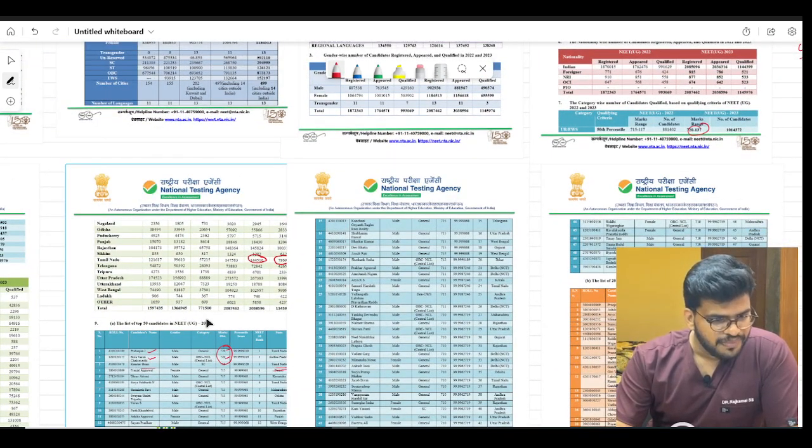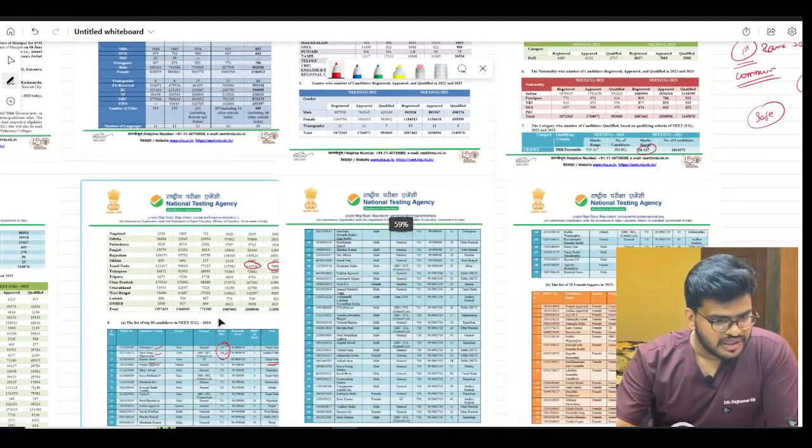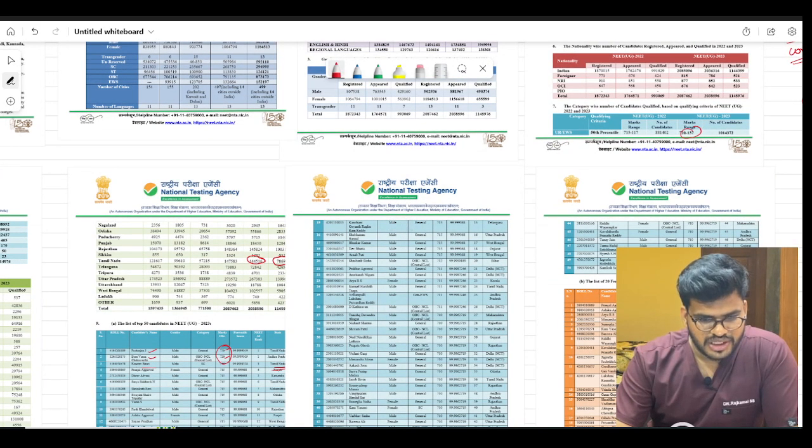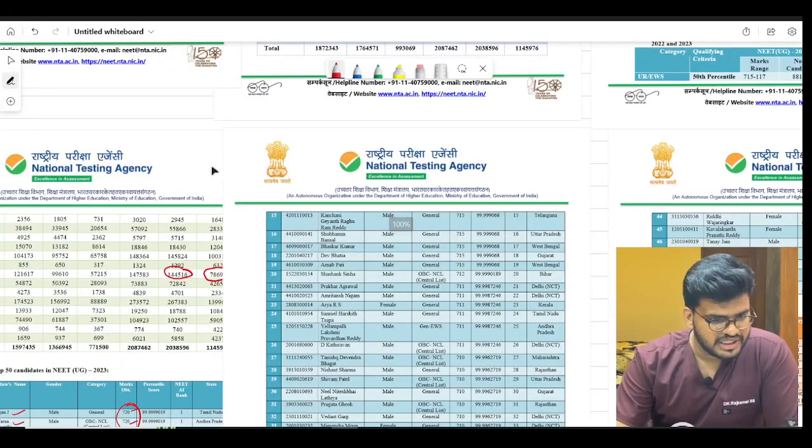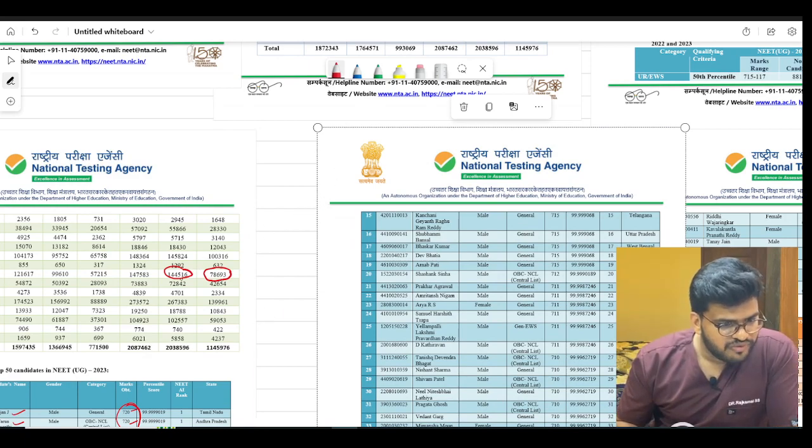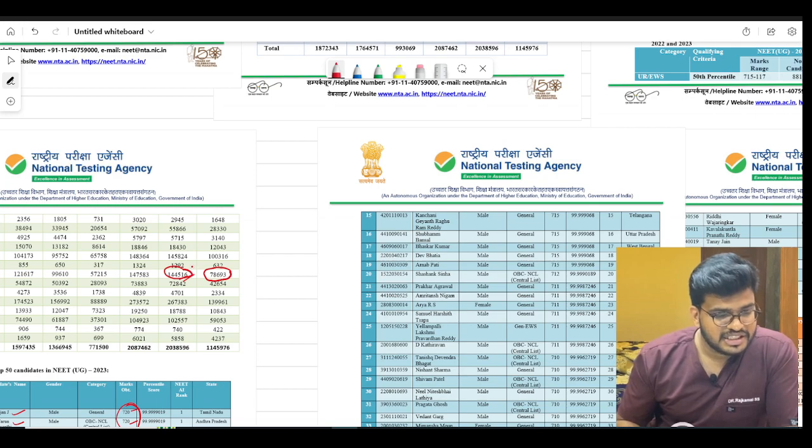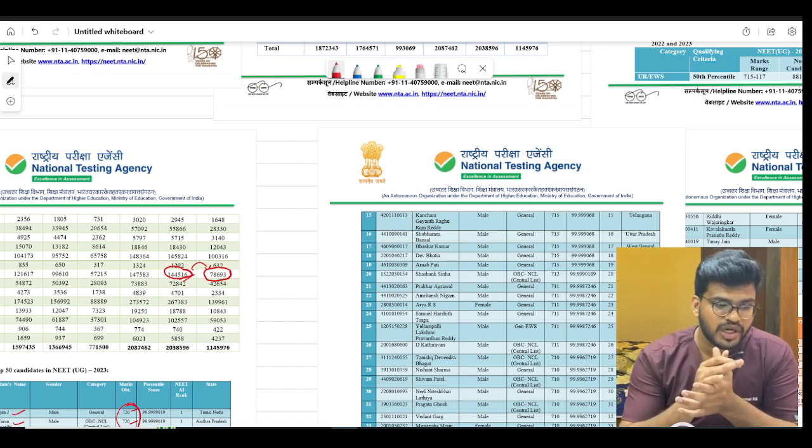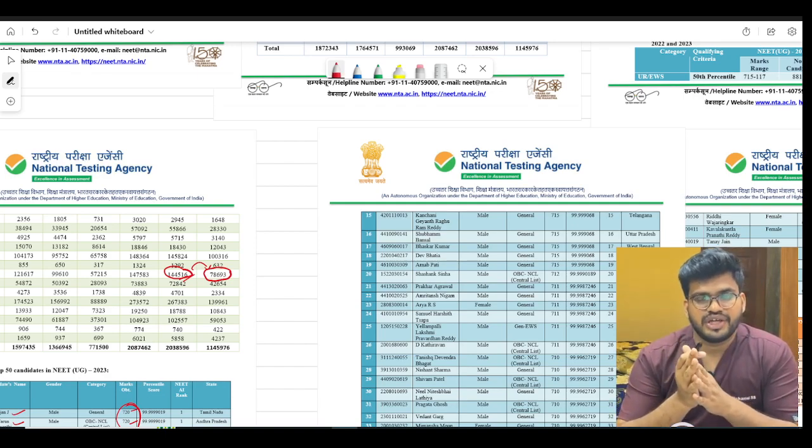The main thing here - in Tamil Nadu, 50 percent of the students nearly passed the exam. It is a very good thing. In Tamil Nadu, 1,44,516 candidates appeared for the exam, out of which 78,693 qualified. Bravo guys, it's a very good qualifying rate - 50 percent!